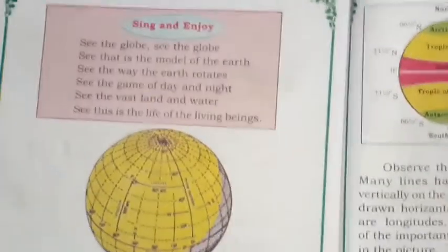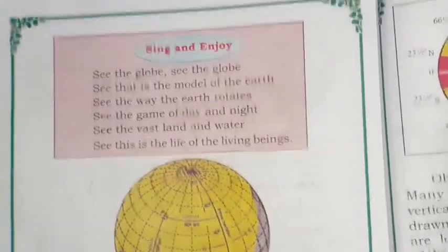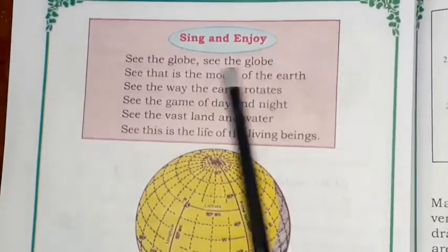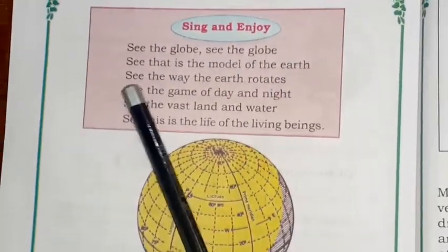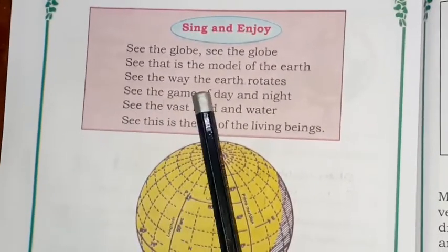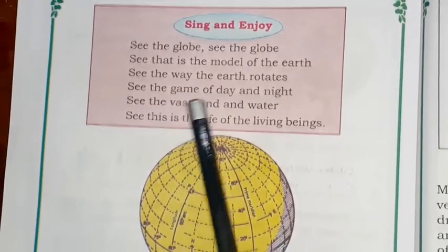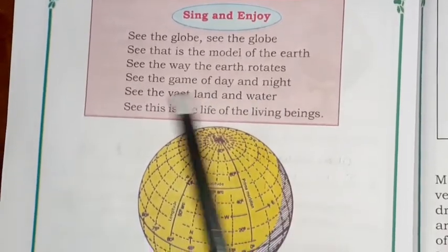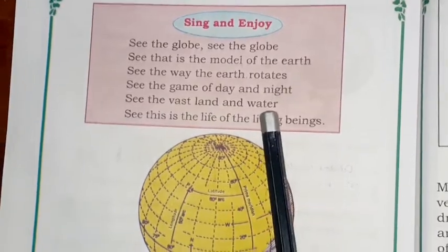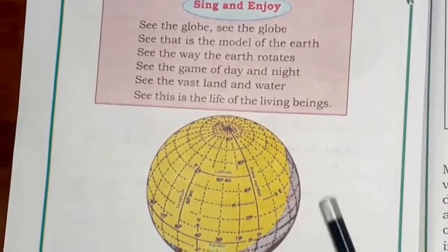Here is a song — let's sing it together. See the globe, see the globe, see the globe — see that it is the model of the earth. See the way the earth rotates. See the game of day and night. See the vast land and water. See the life of the living beings.